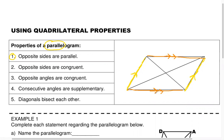So that is what is meant by opposite sides are parallel. Check. On to property two: opposite sides are congruent. Congruent now speaks to length — that means they have an equal length.